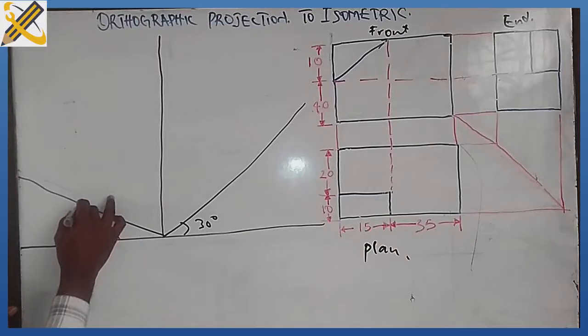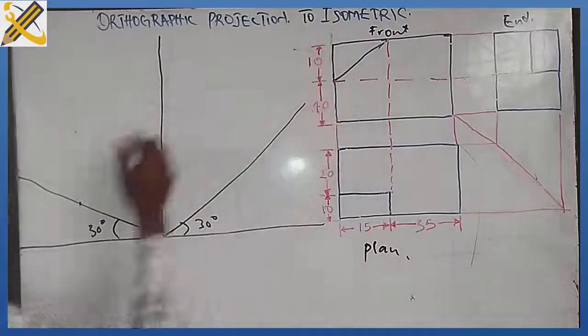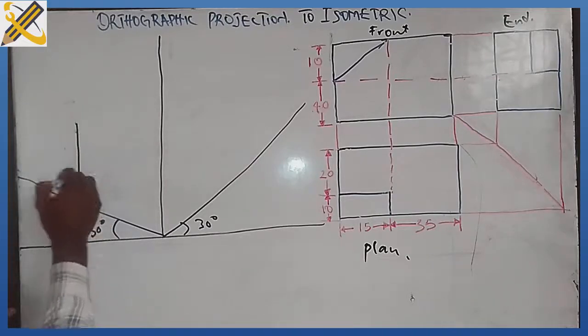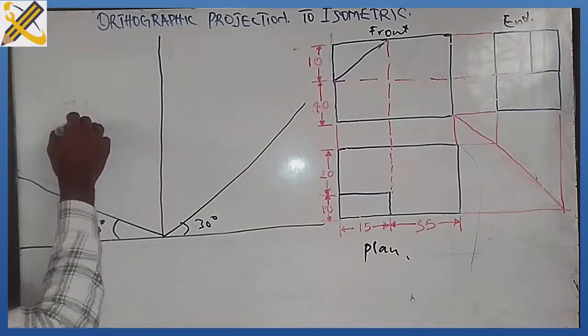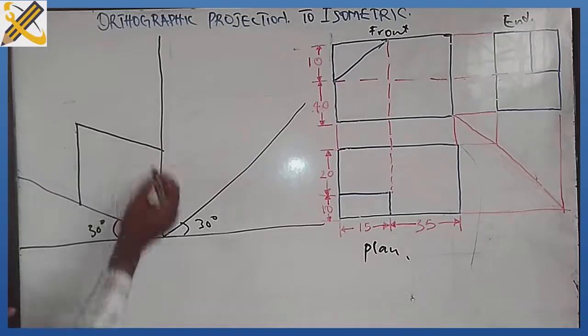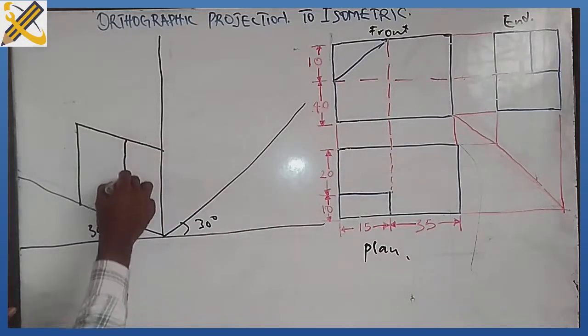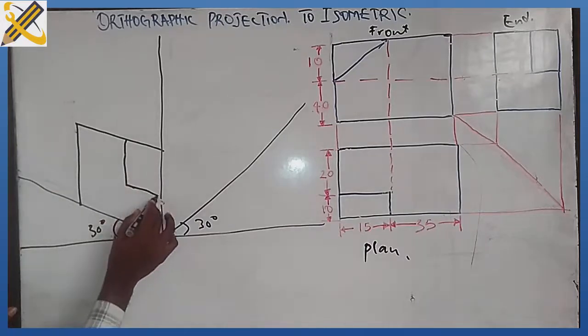Measure and pick 30, mark 30. And what is the height? The height is 50 and I'm going to bring it upwards this way. Having done that, I'm going to bring it down here in isometric plane also.